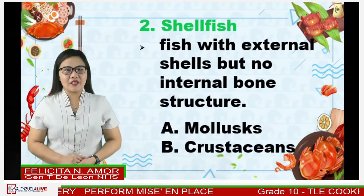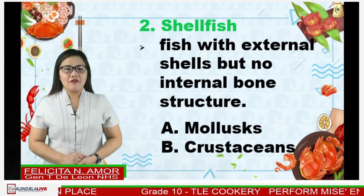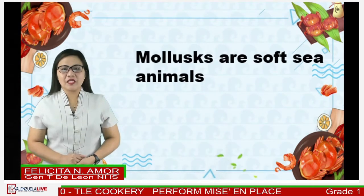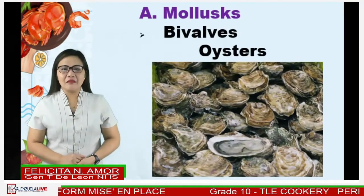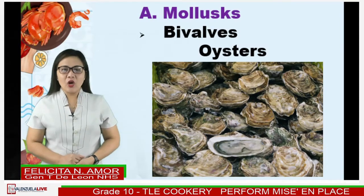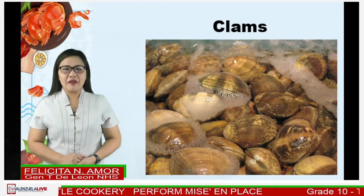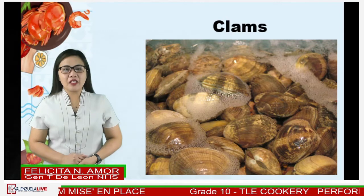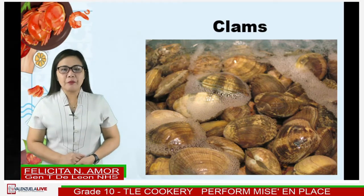Another classification of seafood is shellfish. They are fish with external shells but no internal bone structure. They have hard outer shells. Categories are mollusks and crustaceans. Mollusks are soft sea animals — shellfish with hard, inedible shells. We have three kinds. First is bivalves — they have a pair of hinged shells. Examples are oysters and clams. Clams are a very nutritious whole food with a host of health benefits. They are a lean source of protein, rich in minerals, vitamins, and omega-3 fatty acids. They have been found to possess cancer-preventing properties.